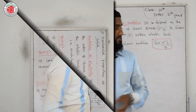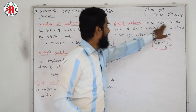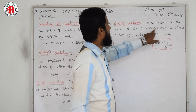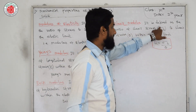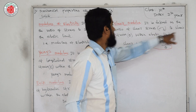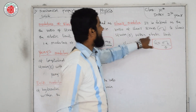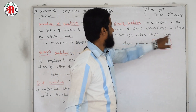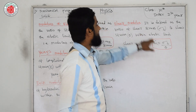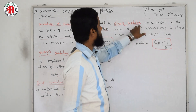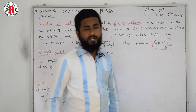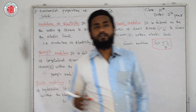Shear modulus is defined as the ratio of shear stress (σs) to shear strain (θ) within the elastic limit. Shear modulus is denoted by G, and the formula is G = σs / Δ.